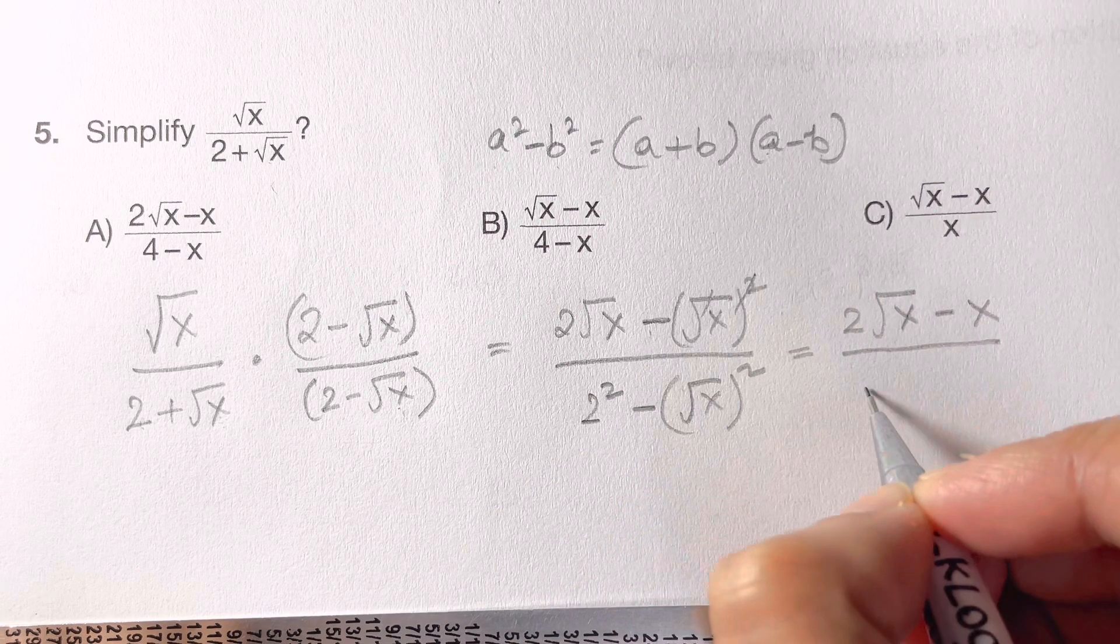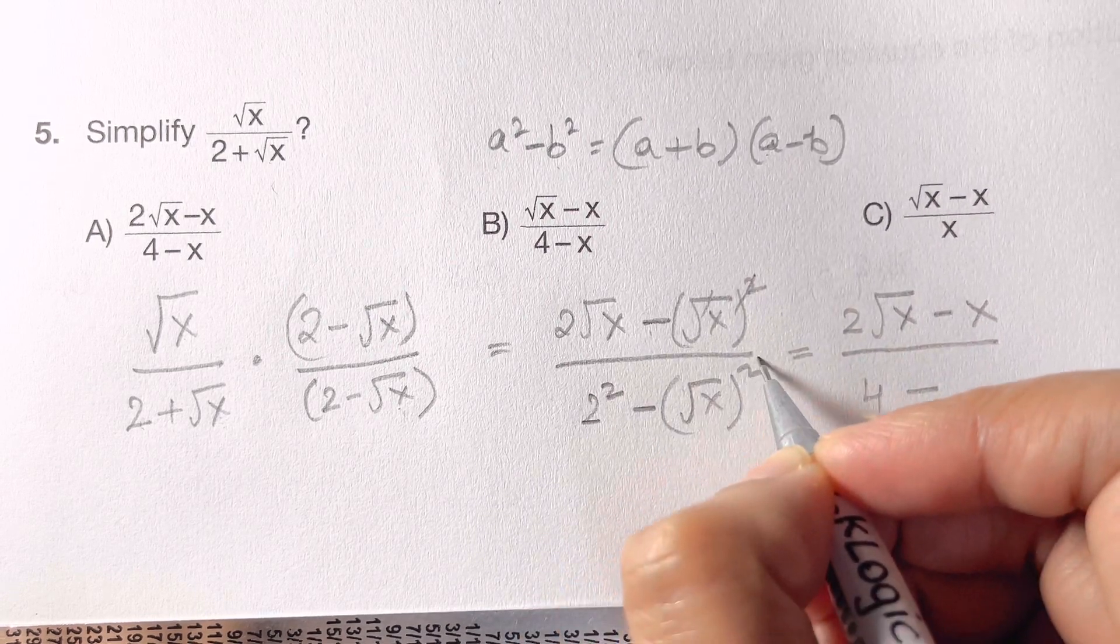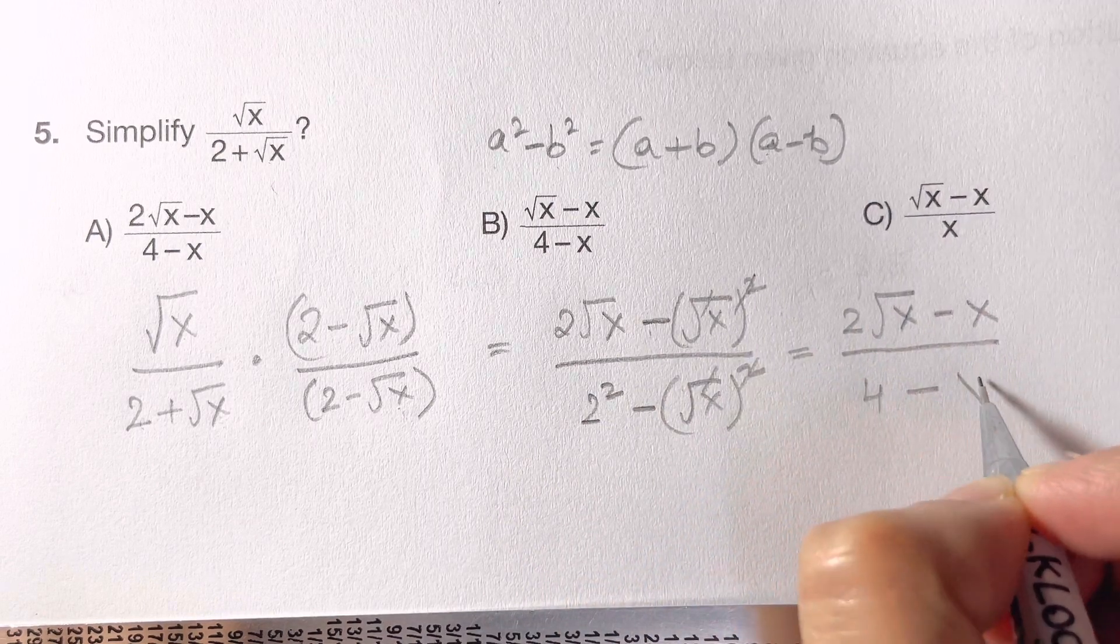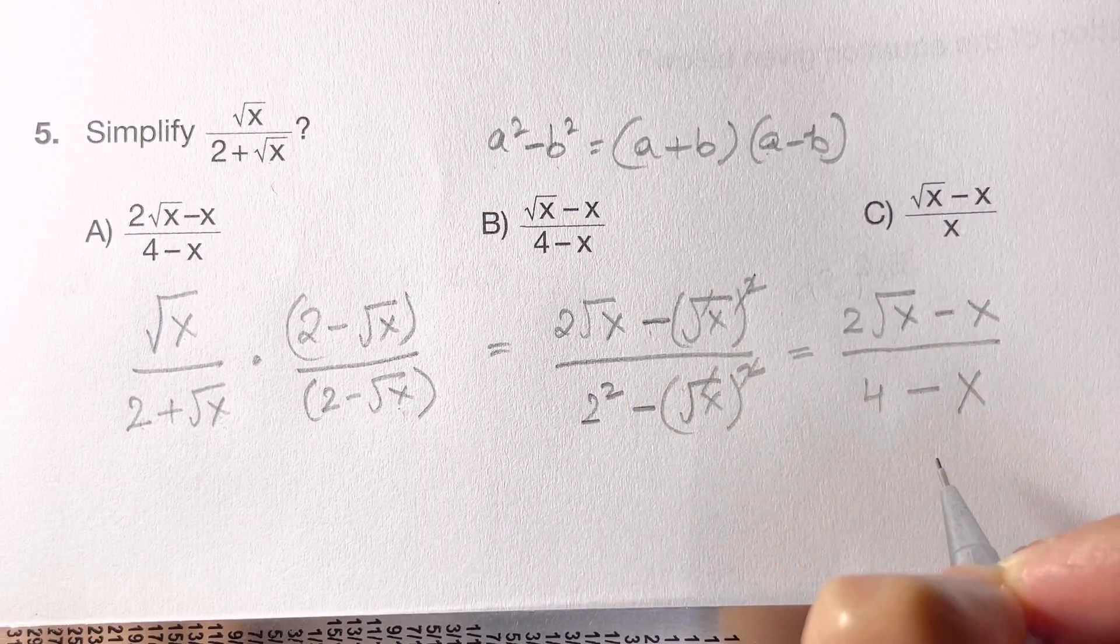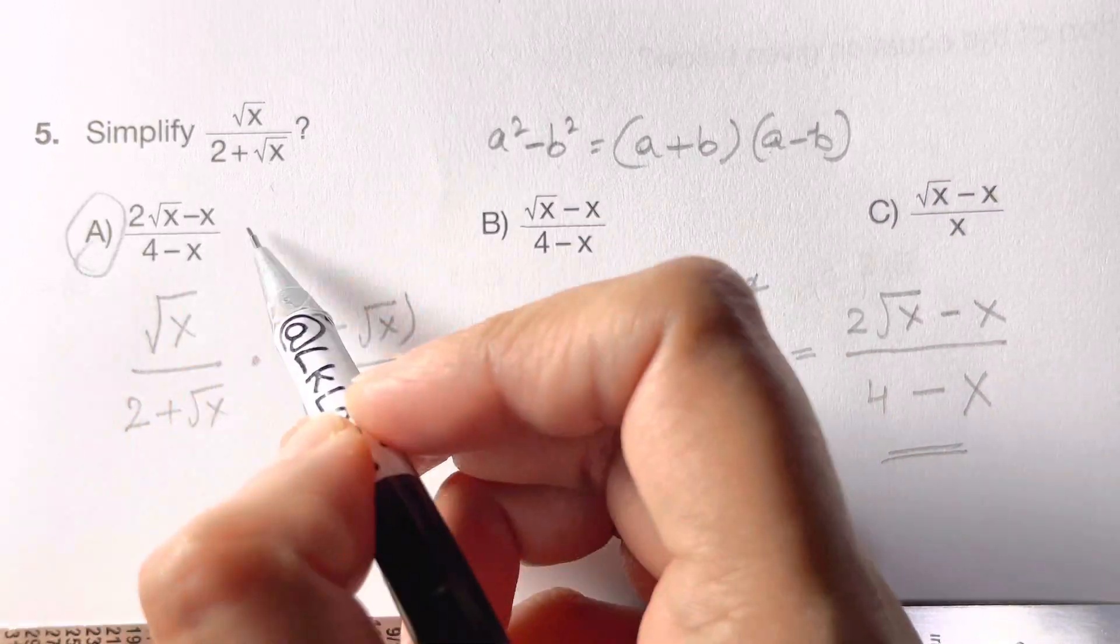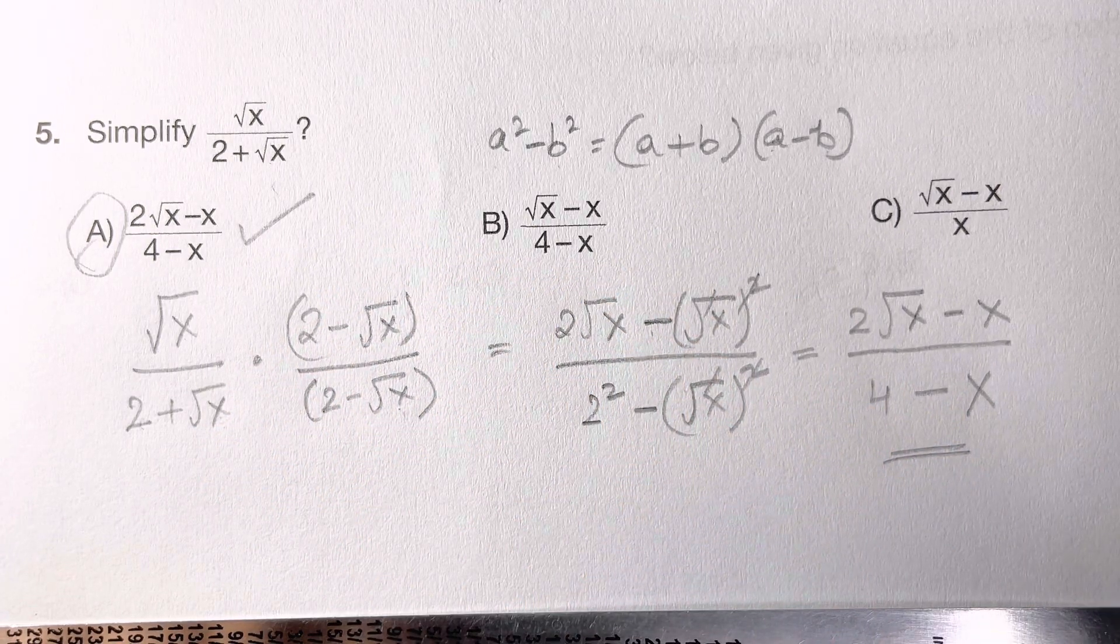2 square is 4, minus square root of x the whole squared. Canceled square root and square, so you're left with x. 4 minus x. So this is your answer, that's your answer choice A. How simple was that?